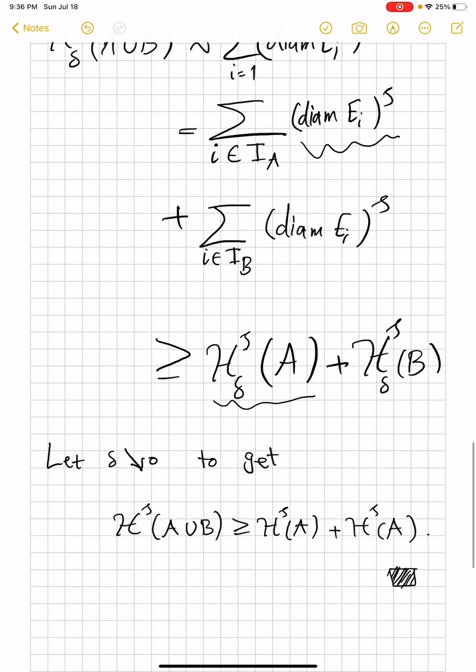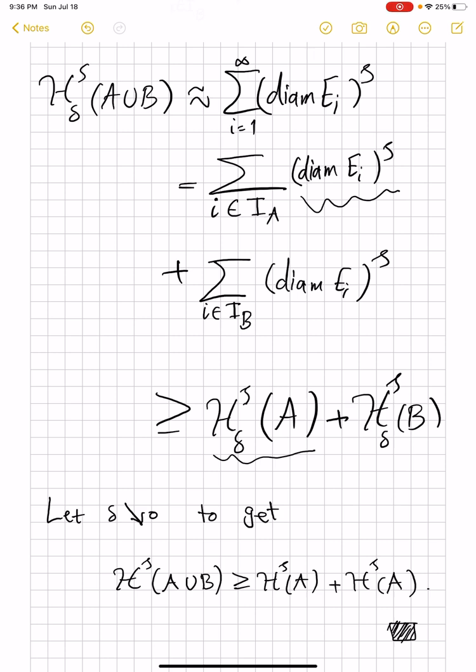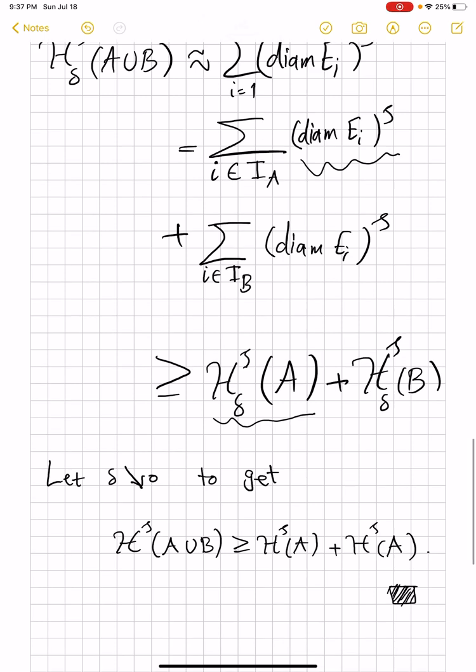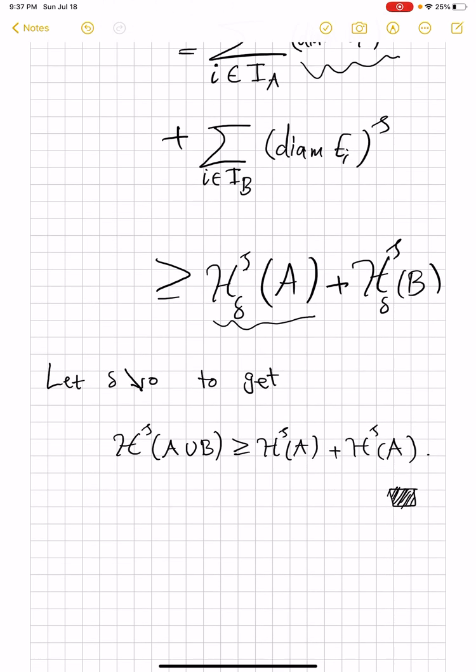And now we let δ go to zero. Every element here is finite, so the limits beautifully converge, so you recover what you wanted. So we get this inequality, as we mentioned above. The reverse is always true. That establishes the additivity on sets that are positively separated, and by the theorem, what we get is that Borel sets of metric spaces are H^s measurable.